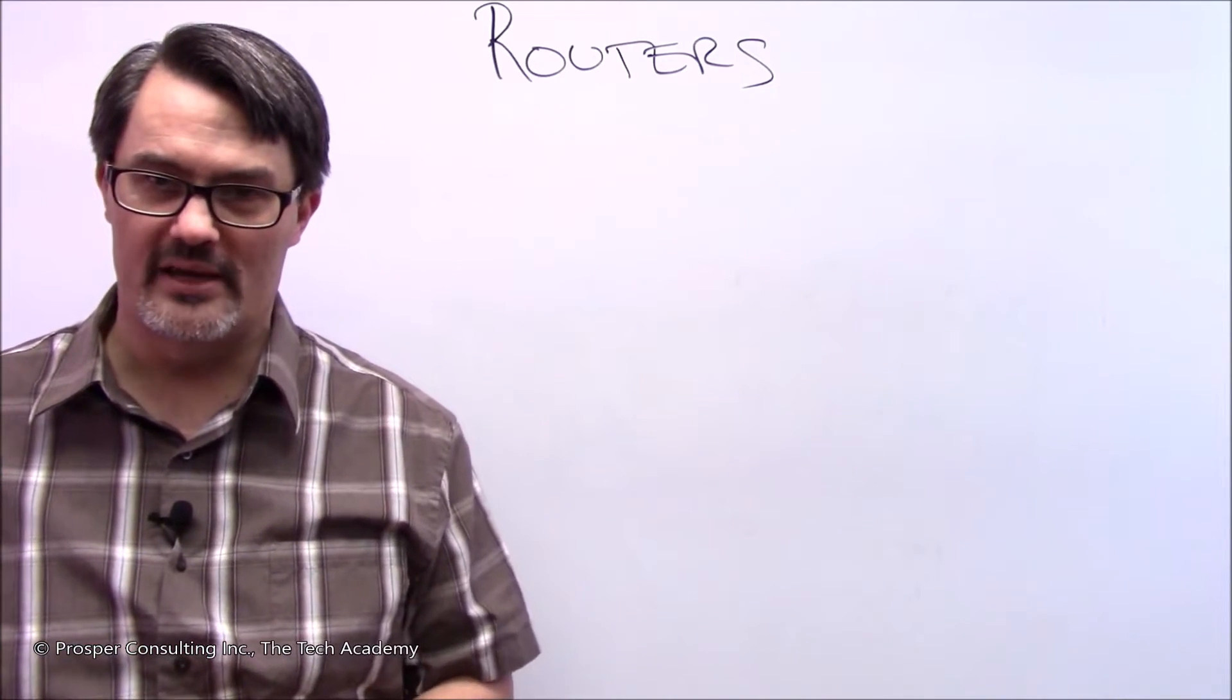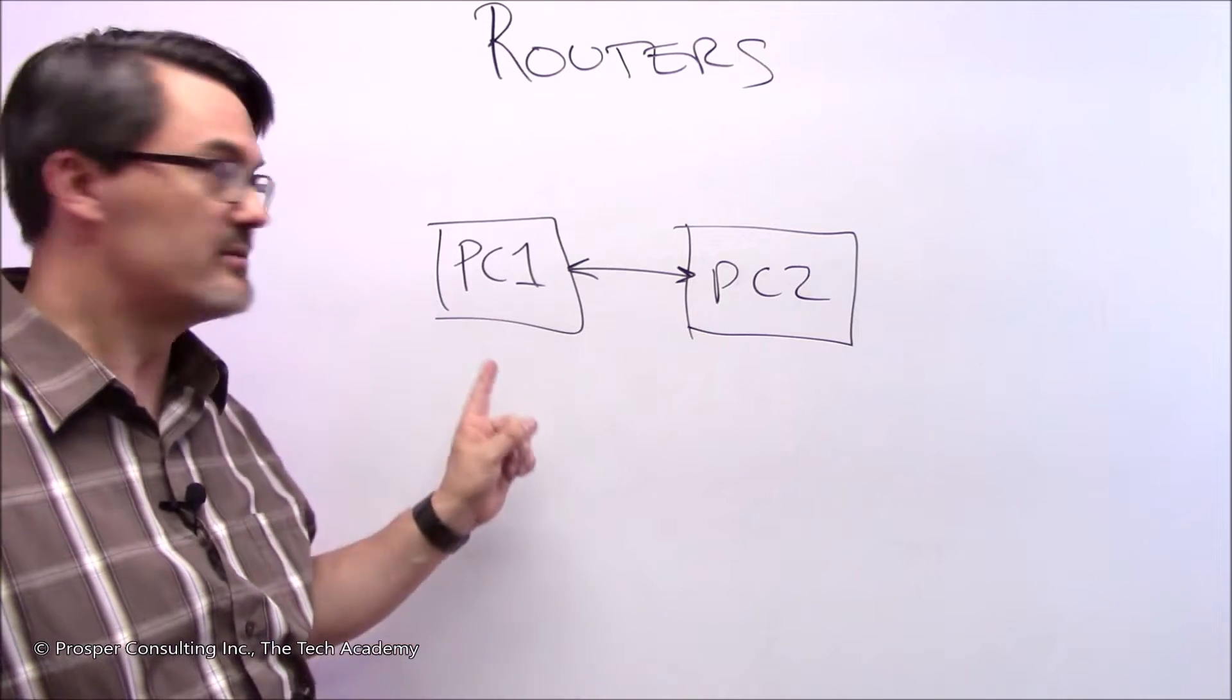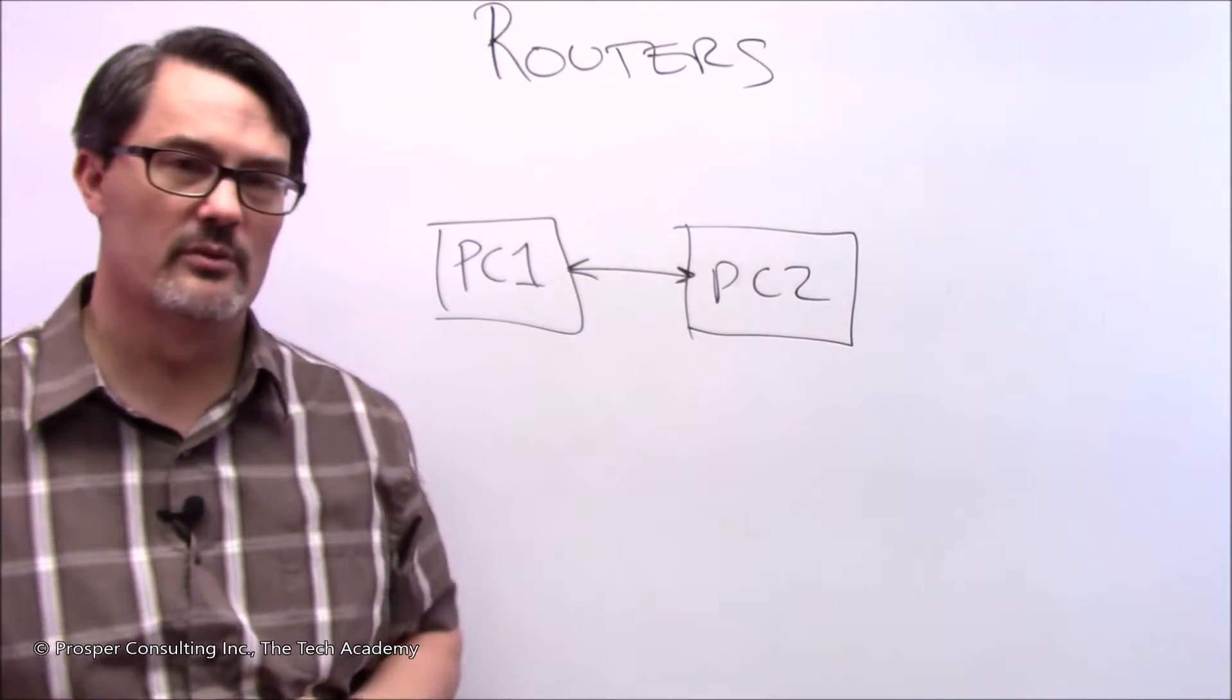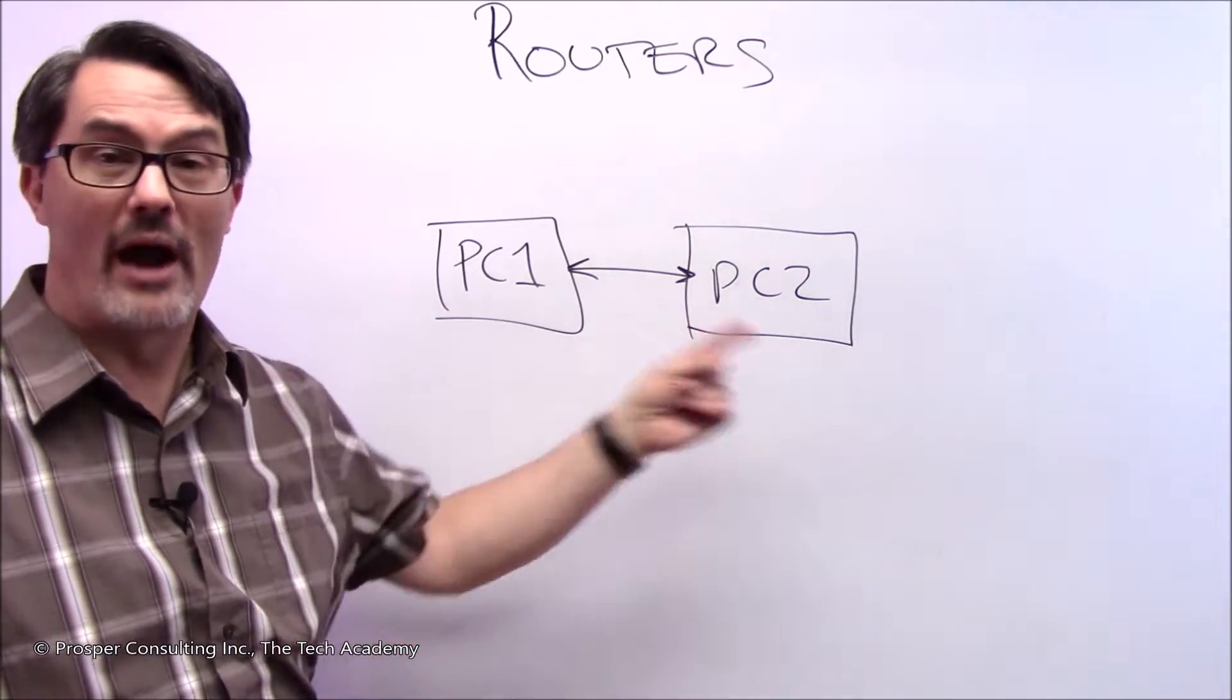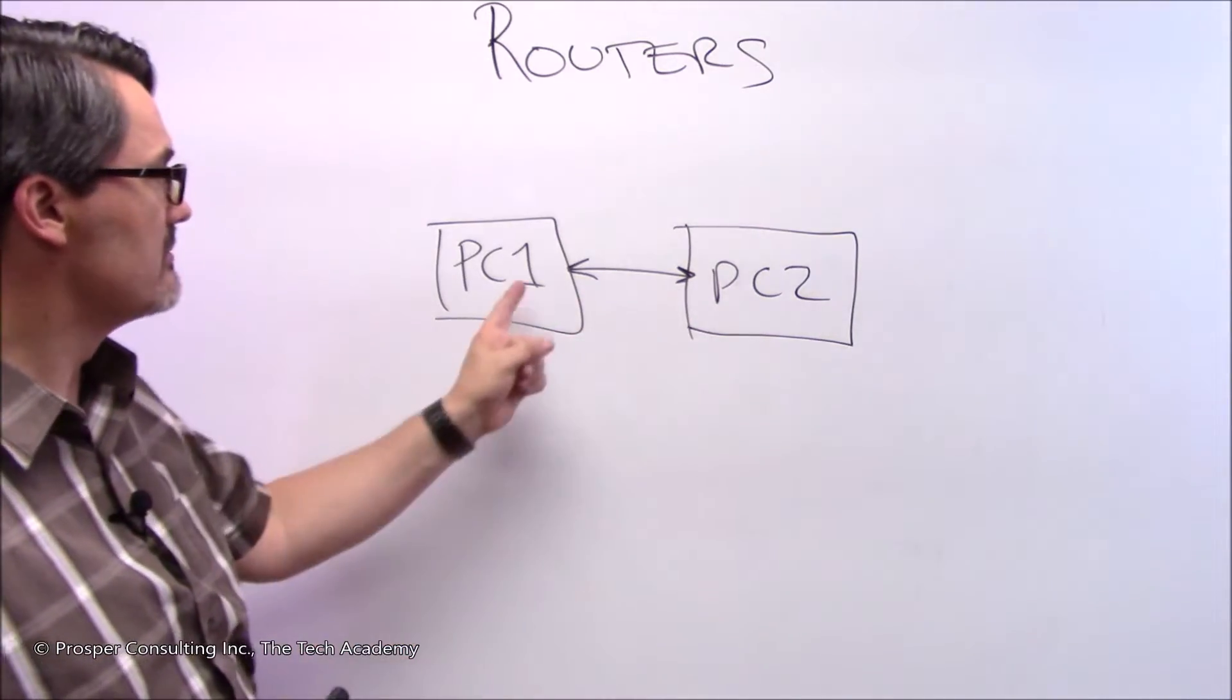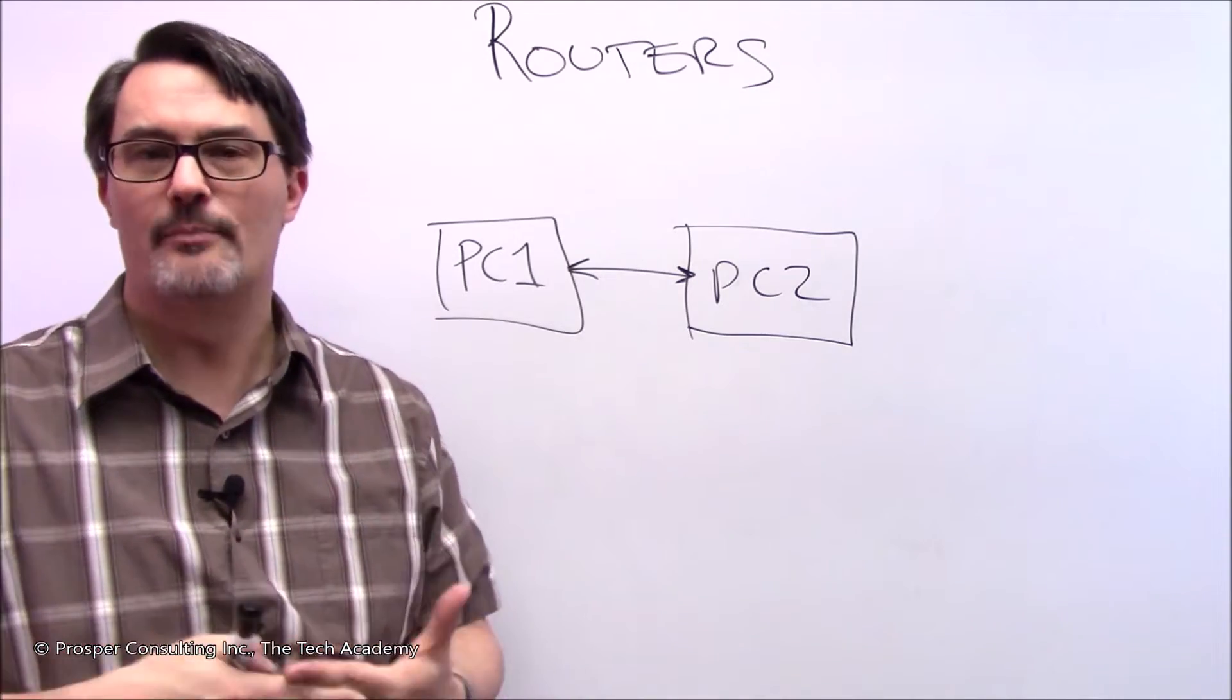Let's look at the most basic network that can be: two computers connected together. Here we have two computers, personal computer one and personal computer two, and they're physically connected. Could be a wire, could be a wireless connection, but they're capable of connecting to each other and transferring data back and forth.